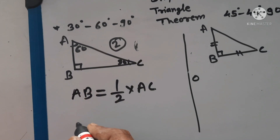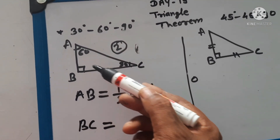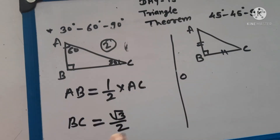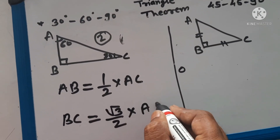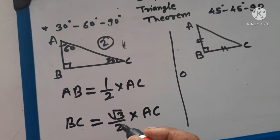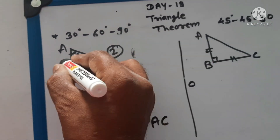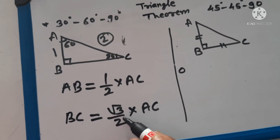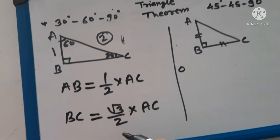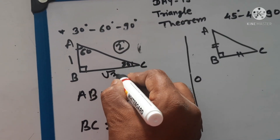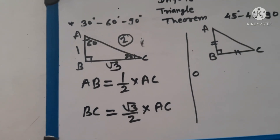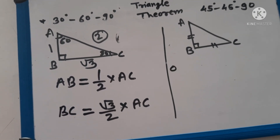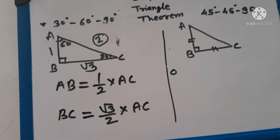Now, the opposite side of the 60 degree angle, which is BC, is equal to root 3 upon 2 of the hypotenuse. Hypotenuse is AC. If AC is 2, then the length of BC is equal to root 3 upon 2 into AC — that is 2. The 2s cancel, so BC equals root 3. So: opposite side of 60 degree angle is root 3 upon 2 of hypotenuse, and opposite side of 30 degree angle is 1 upon 2 — half of the hypotenuse.